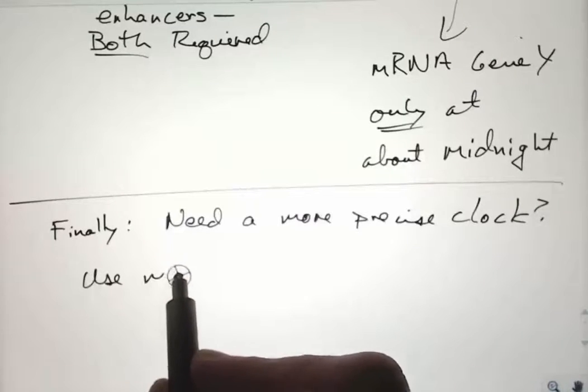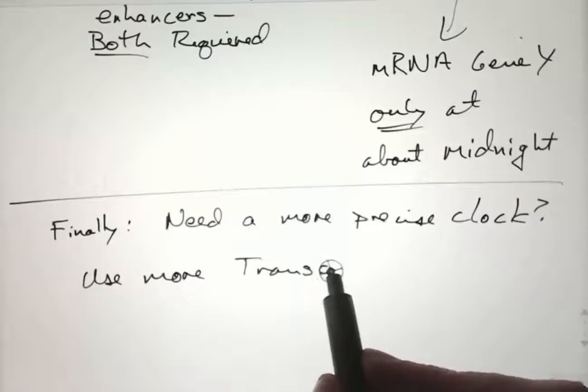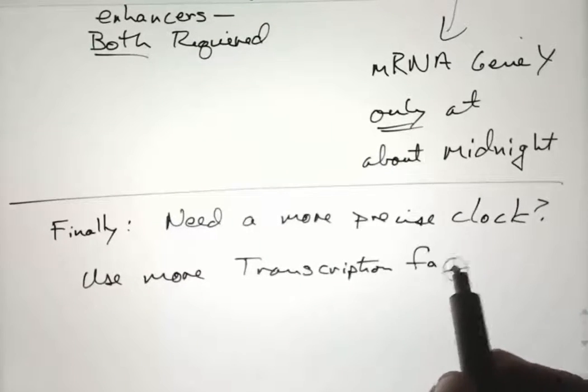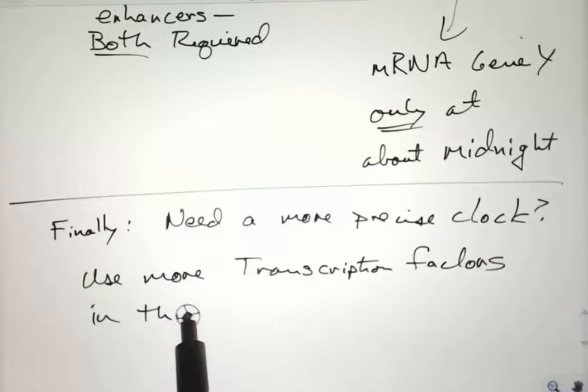What if you need an even more precise clock? Use more transcription factors, either the same core set of two or three transcription factors, or each of the A, B, and C could trigger other transcription factors.